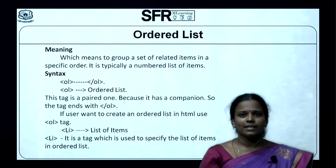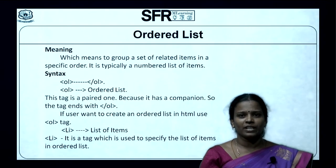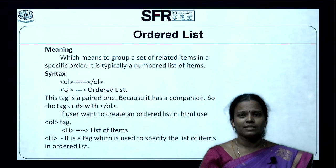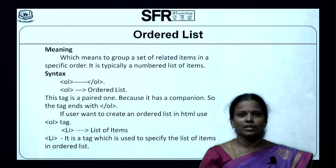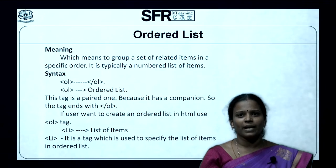Now let us see the meaning of Ordered List. Ordered List means to group a set of related items in a specific order. It is typically a numbered list of items. Here is the syntax of Ordered List. OL denotes Ordered List. This tag is a paired one because it has a companion, so the tag ends with slash OL.